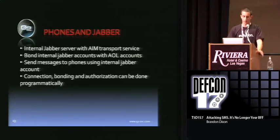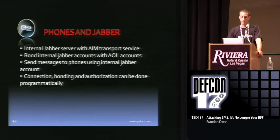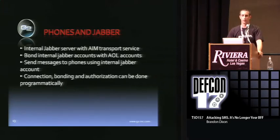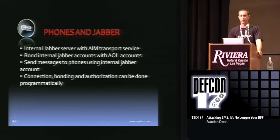Tying everything together — phones and Jabber. You can have an internal Jabber server set up with an AIM transport service, either local or using one of the public transports. You bond your Jabber account with your AOL account and send messages to the phone using your Jabber account. The connection, bonding, and authorization can be done programmatically — you don't actually have to have a fat client. PSI is one messenger that does this. The XMPP spec is readily available; they tell you how to do it, they have the code there, and all you have to do is send the messages to the right server.